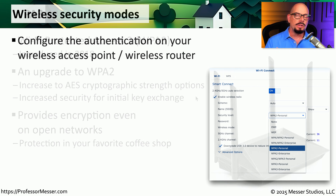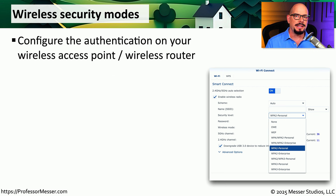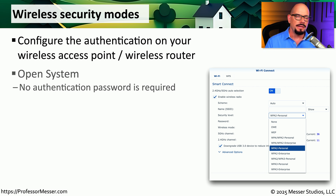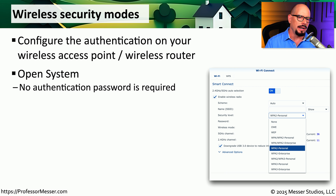If you look at the configuration of the wireless settings on your access point, you may see a number of different configuration options. One of them is an open system — one that has no password set and anyone can connect to that wireless network. This might be the configuration you would find in a coffee shop or a hotel wireless network.